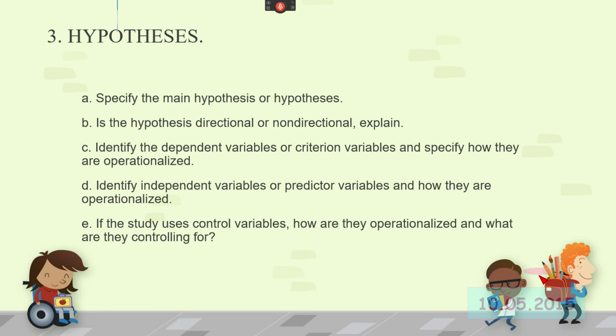Identify the dependent variables, criterion variables. Specify how they are operationalized. Independent variables, predictive variables. How they're operationalized. And finally if there's any control variables.